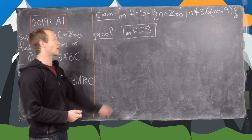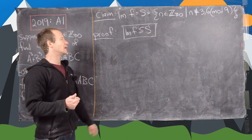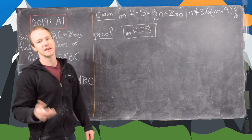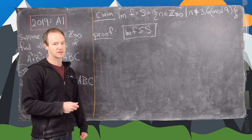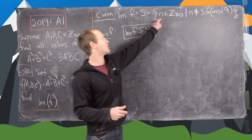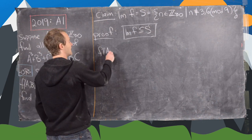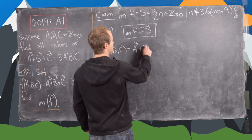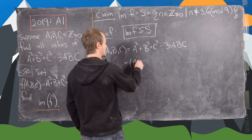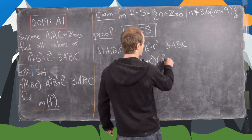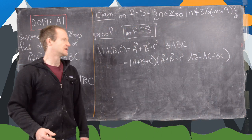Now we show the image of f is a subset of S. We have two things to show: first, that the image is always non-negative, and second, that if something in the image is a multiple of 3, it's also a multiple of 9. For non-negativity, we write f(a,b,c) = a³+b³+c³−3abc, which factors as (a+b+c)(a²+b²+c²−ab−ac−bc).